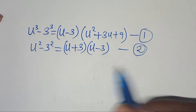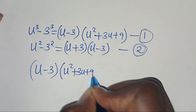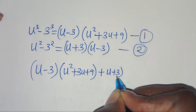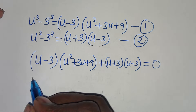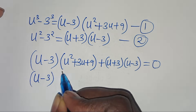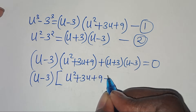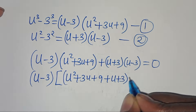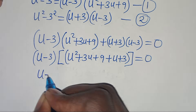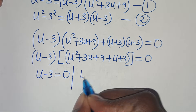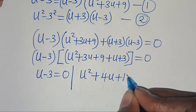Combining equations 1 and 2, we have (u minus 3)(u^2 plus 3u plus 9) plus (u plus 3)(u minus 3) equals 0. Factoring out (u minus 3), we get (u minus 3)(u^2 plus 3u plus 9 plus u plus 3) equals 0, which simplifies to (u minus 3)(u^2 plus 4u plus 12) equals 0.